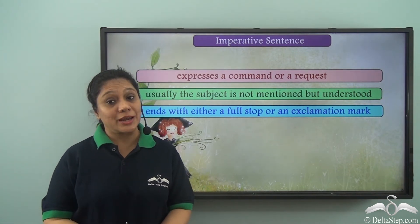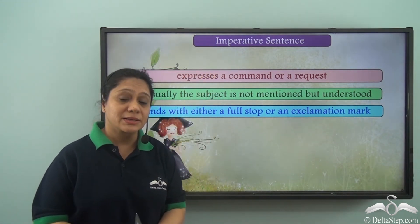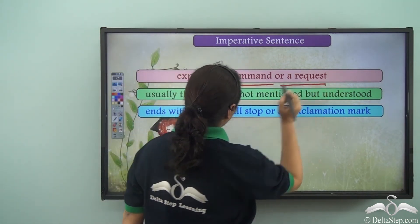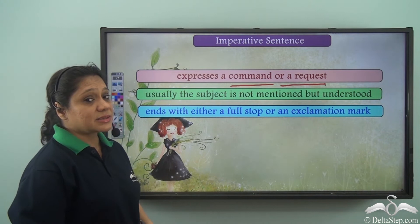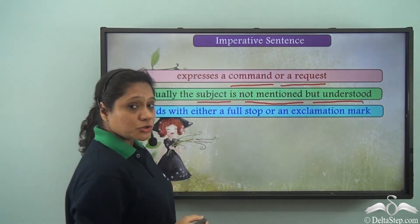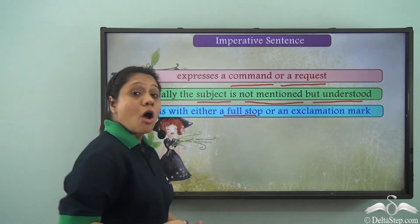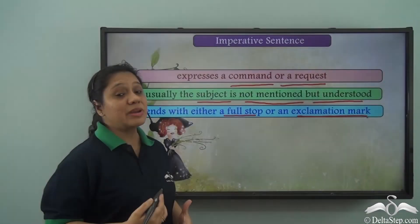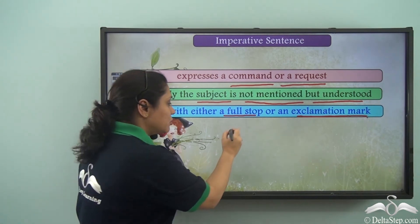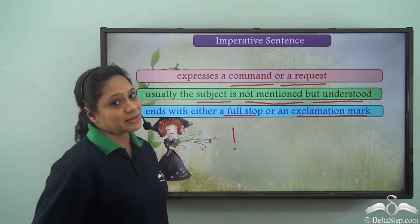So what have we learnt today? We have learnt about a special kind of sentence known as the imperative sentence. It expresses a command or a request. In these kinds of sentences, the subject is usually not mentioned but understood. These sentences end with either a full stop or an exclamation mark — when there is a strong feeling or emotion associated with the command or request, we use an exclamation mark; otherwise we use a full stop.